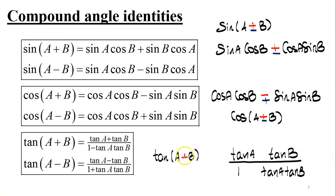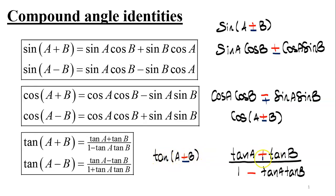For tan of a plus b, tan a and tan b are added at the numerator — the numerator keeps the same sign as the one inside tan — while the denominator is one minus tan a tan b. For tan of a minus b, the numerator is tan a minus tan b, and the denominator is one plus tan a tan b — the opposite operation. We'll prove these in another lesson and now move on to examples.